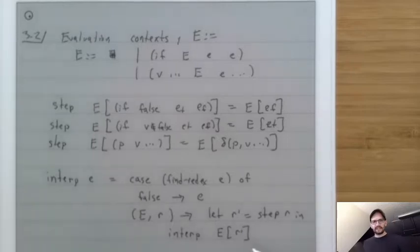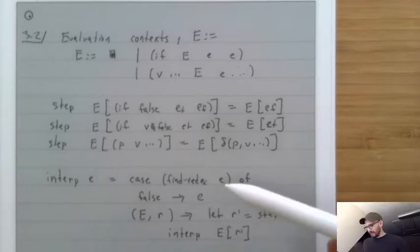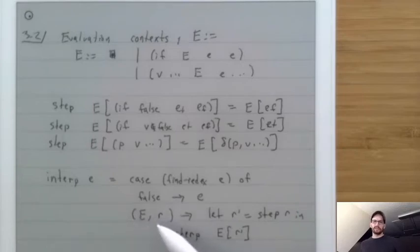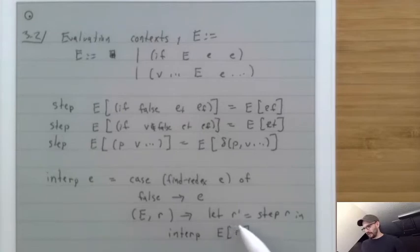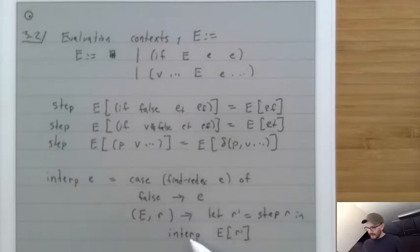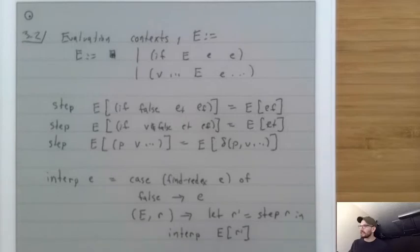The way the interpreter works: we call find_redex. If it returns false, there is no redex, so we return e. Otherwise it returns a pair of an evaluation context and a reducible expression r, and then we call step on r — which applies one of the three rules — plug the result back into E, and call interp again.